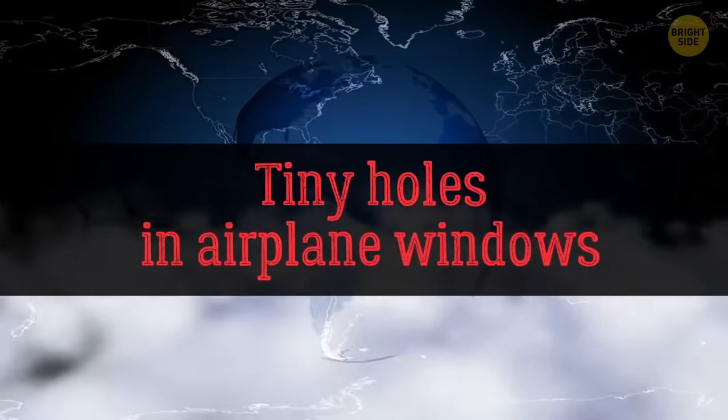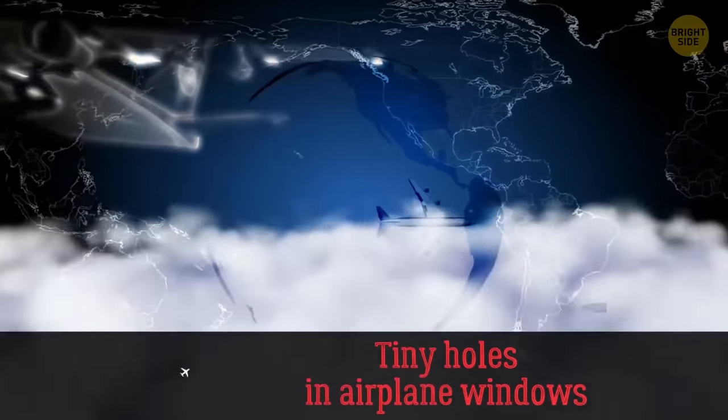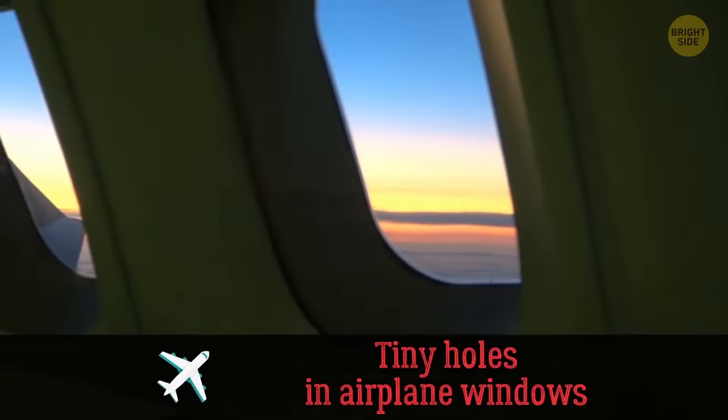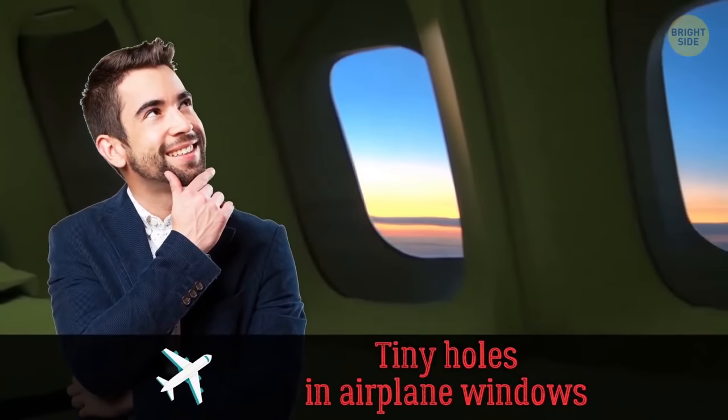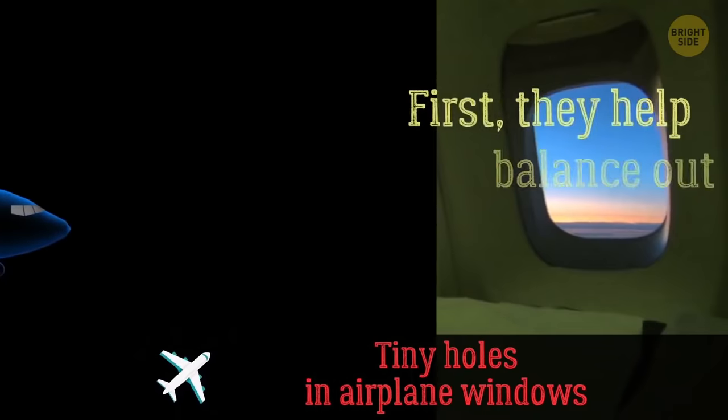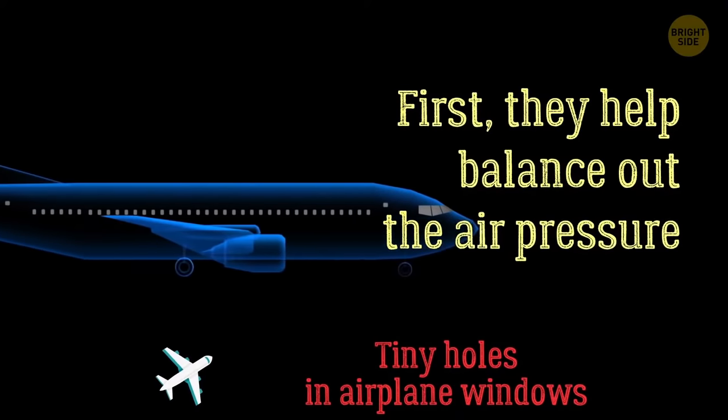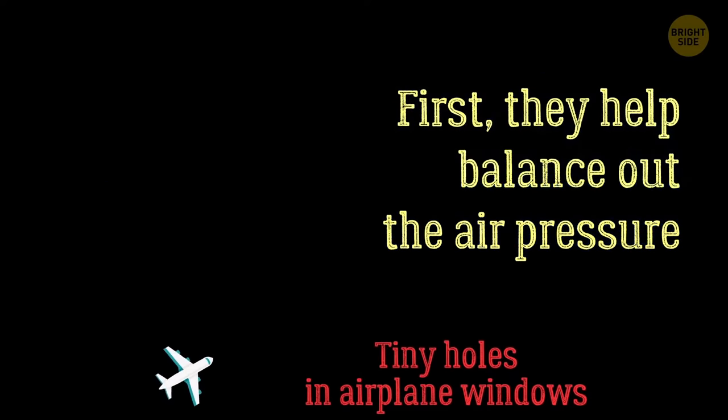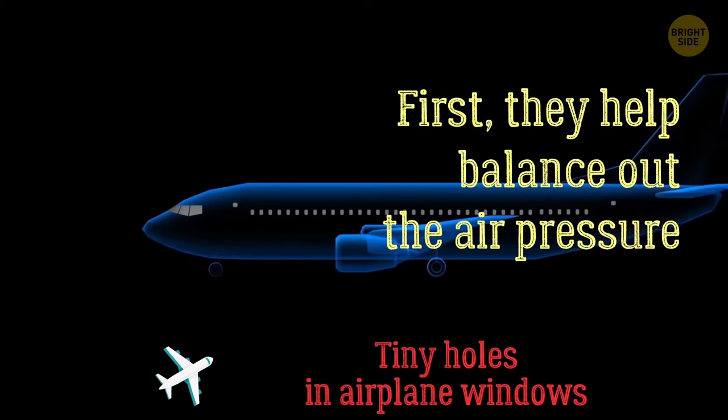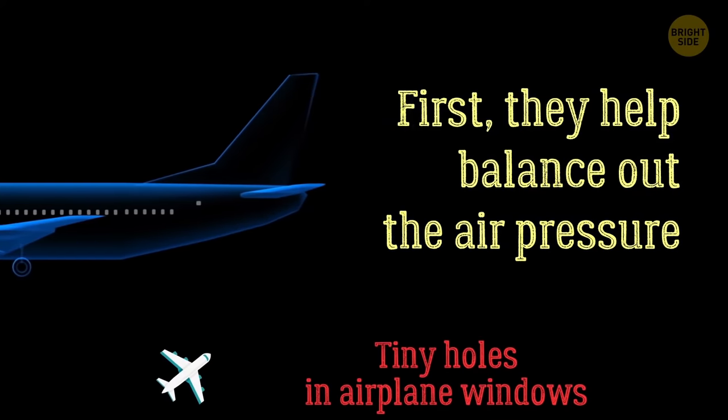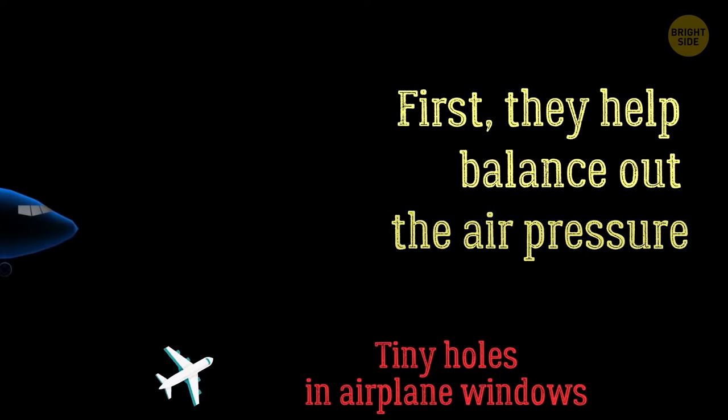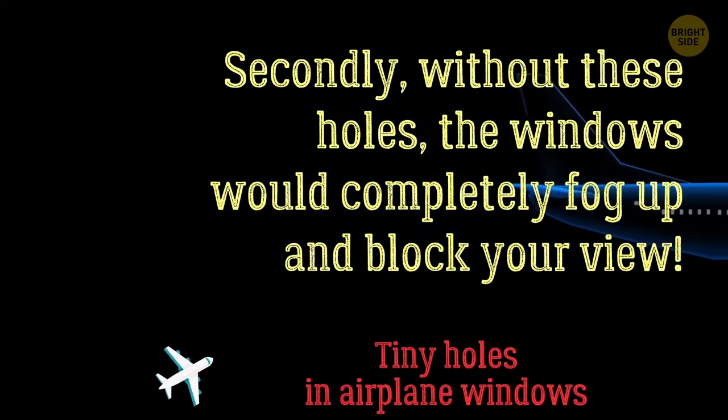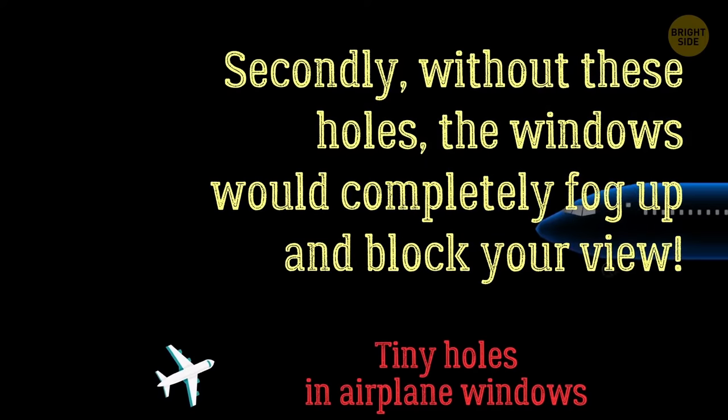Have you ever noticed the tiny hole in an airplane window and wondered why it was there? Actually, these holes have two purposes. First, they help balance out the air pressure. When a plane ascends, the pressure inside and outside the cabin differs dramatically. Thanks to these little holes, the outer windows don't have to bear all the pressure. Secondly, without these holes, the window would completely fog up and block your view. Well, that's actually kind of cool, isn't it?